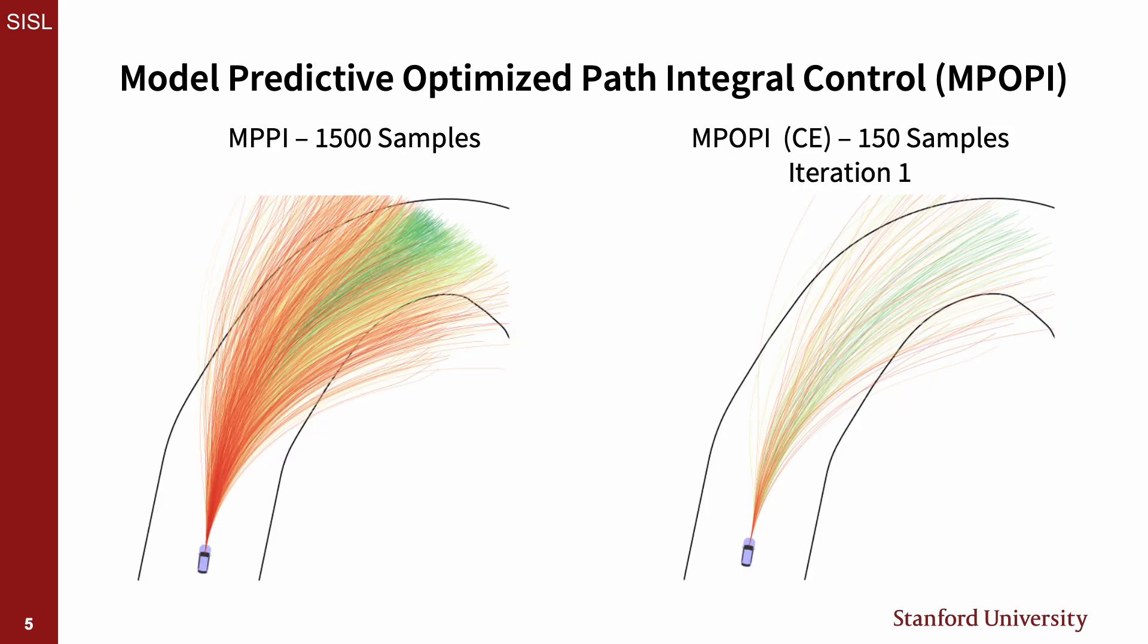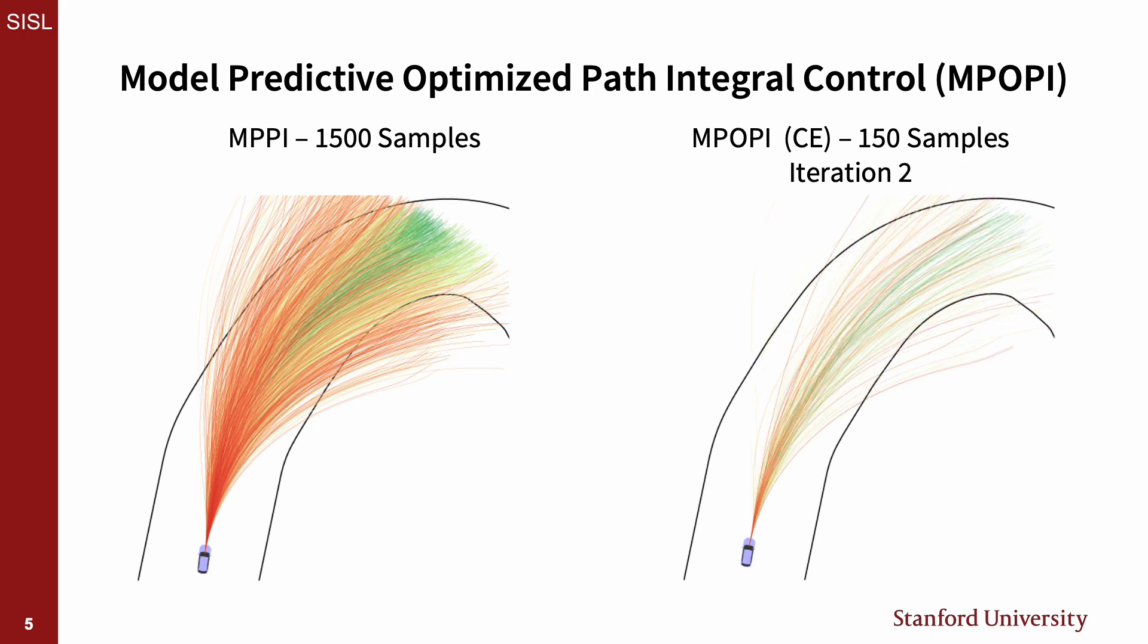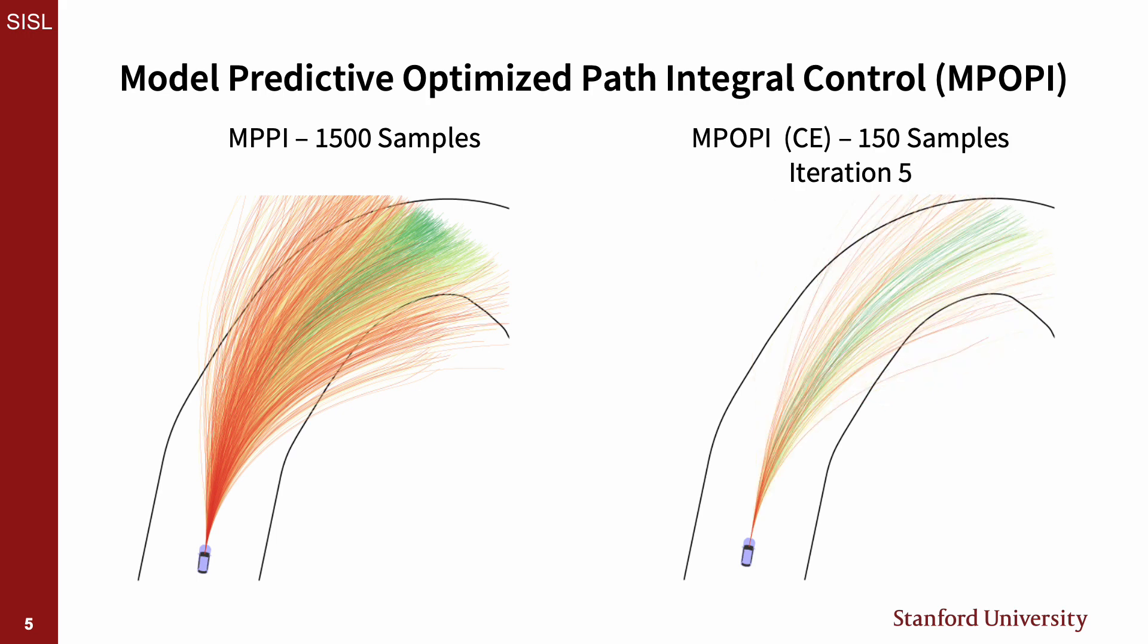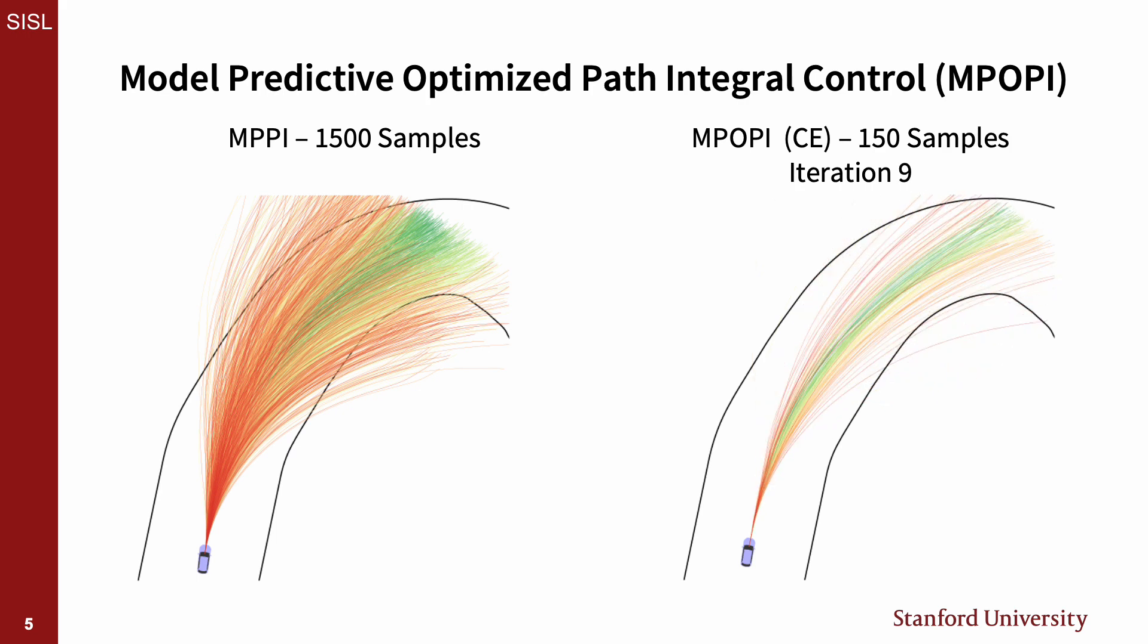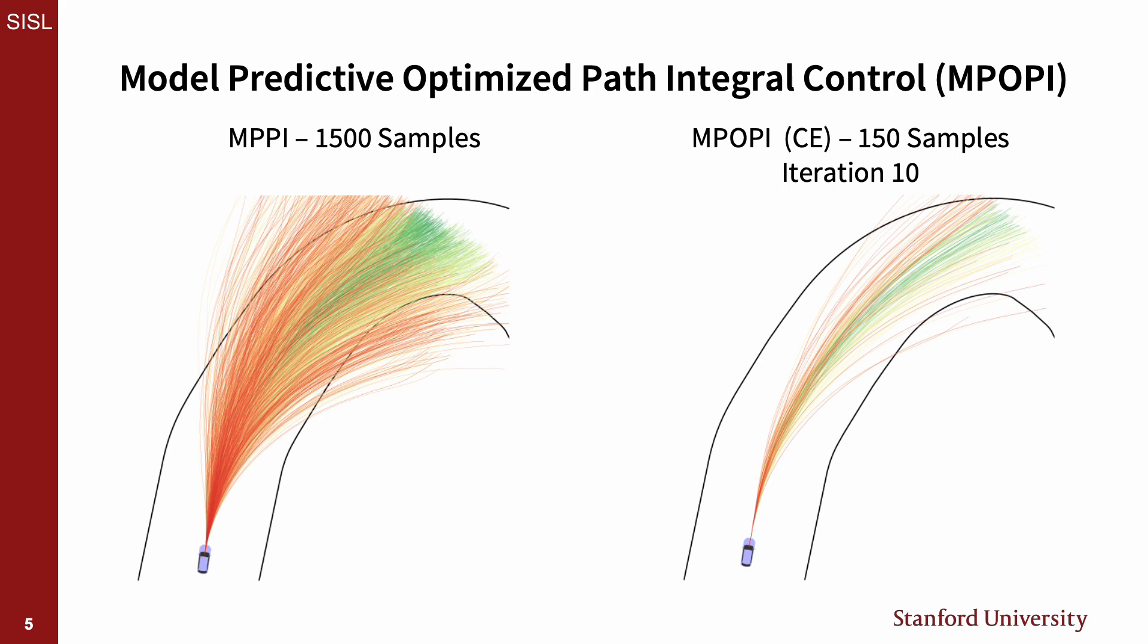Here is a depiction of how the resulting sample controls change as the sampling distribution evolves through iterations of a cross-entropy algorithm. Note that the resulting trajectories improve with each iteration, which allows for MPOPI to be used as an anytime algorithm.